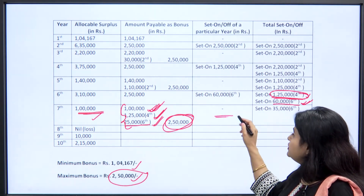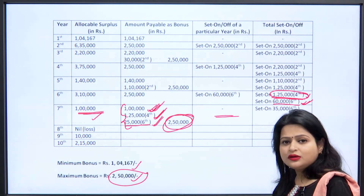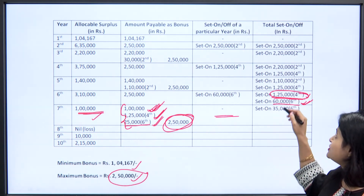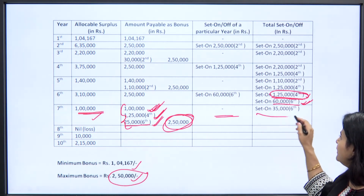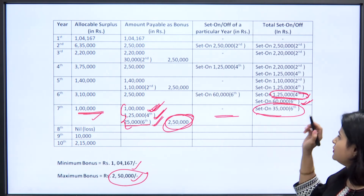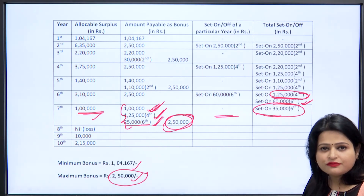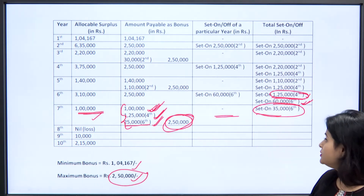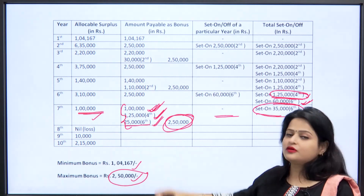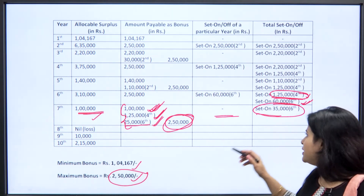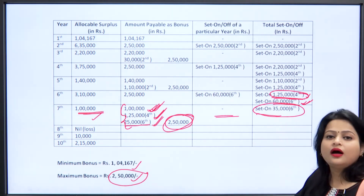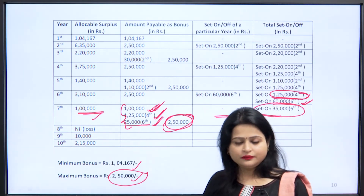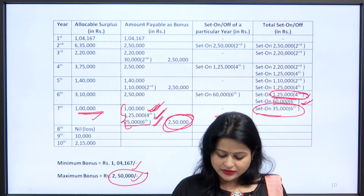For the seventh year there is no set on and set off. Looking at the total set on and set off, we are left with a set on of rupees 35,000 from the sixth year, as we consumed 25,000 from the original 60,000. The situation for the seventh year is clear.